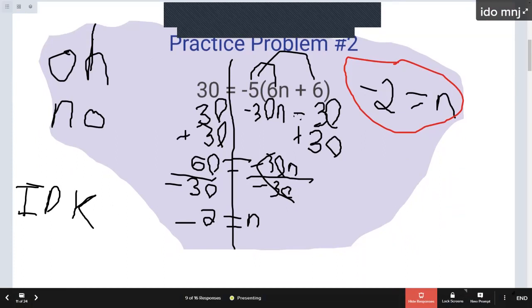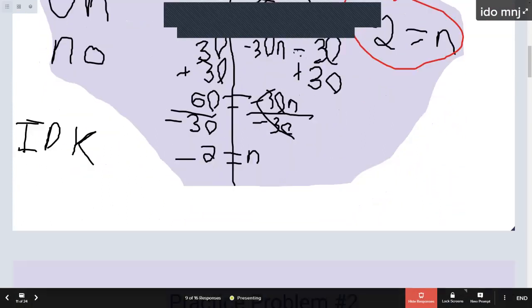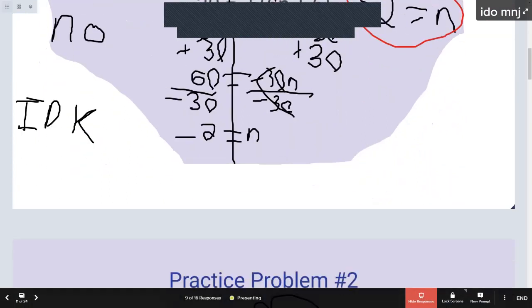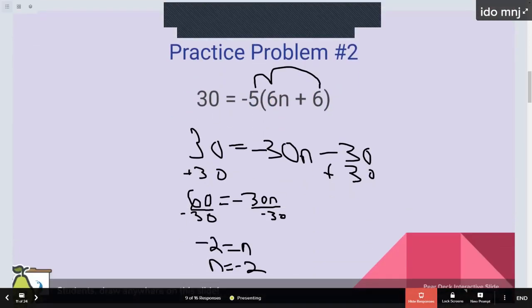Yep, again, beautiful distribution. You add a 30. Good. And then you divide by negative 30. That's perfect. So, I'm not sure where the IDK came from, sir. But, because I can see who did what. You guys can't, but I can see. So, sir, you did a beautiful job. There's no IDK needed. Thank you.